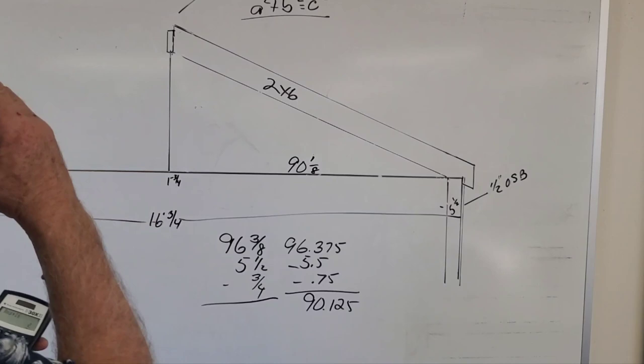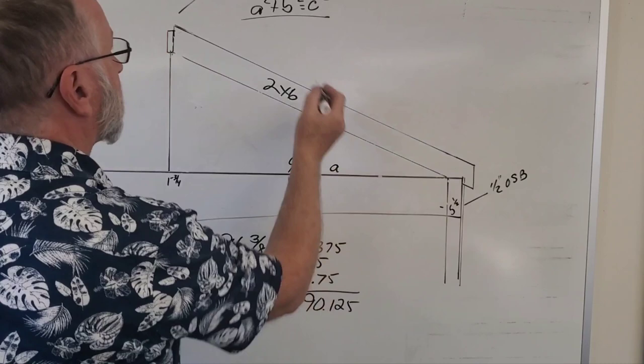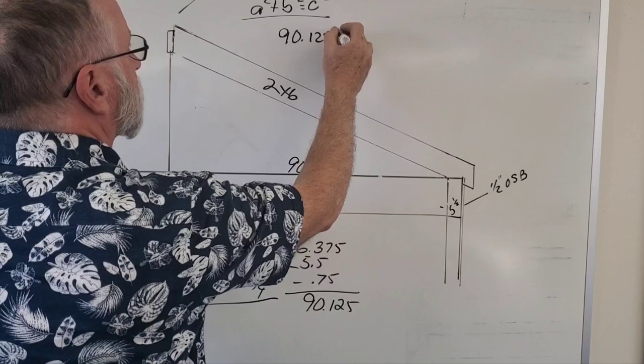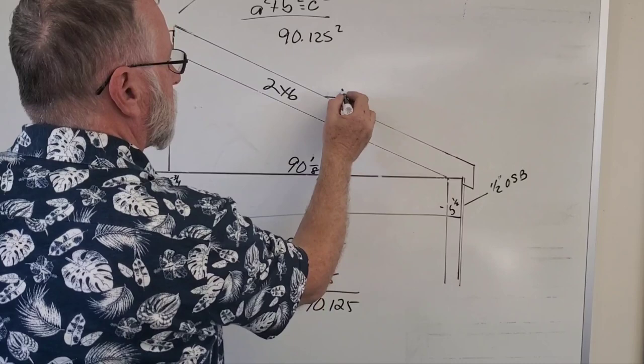So now I have my length of this side, we'll call this 'a'. Now how tall is this? My pitch is for every foot that I go over, I go up 6 inches.